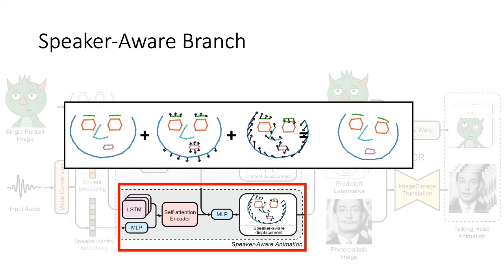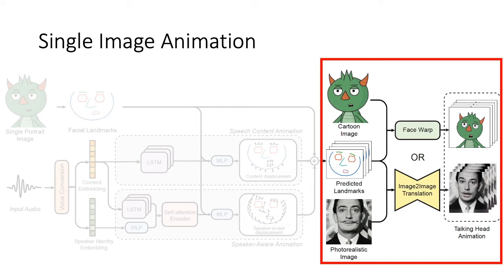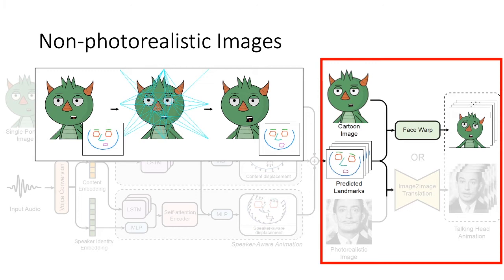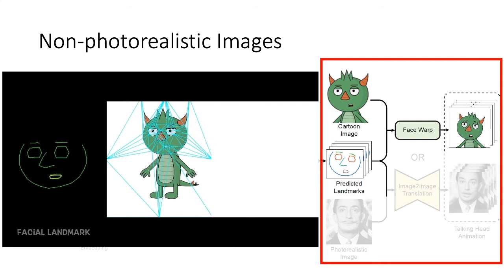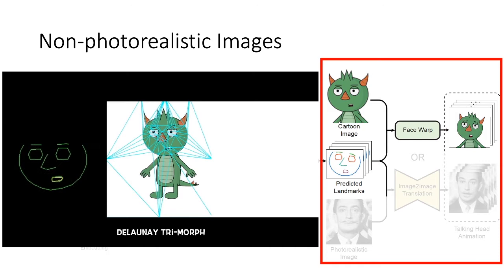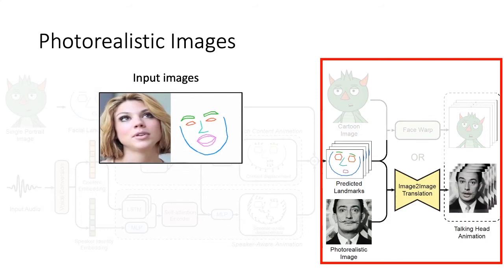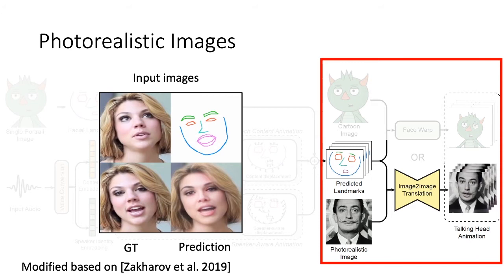For non-photorealistic images, we use simple triangular morphing. Once we get the predicted landmarks, we apply Delaunay triangulation on the input image, and then use that to drive 2D flat-shaded cartoons. For the lower branch where we have photorealistic images, we use a modified version based on Zacheroff. For more details, please see our paper.